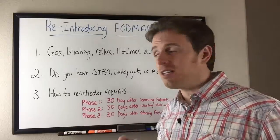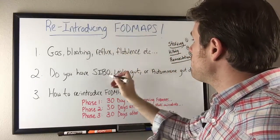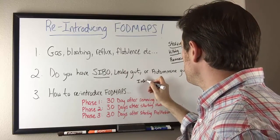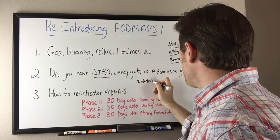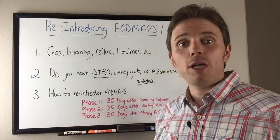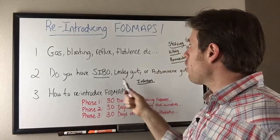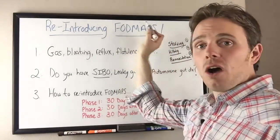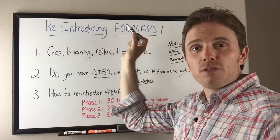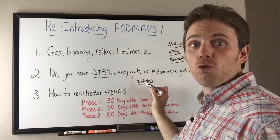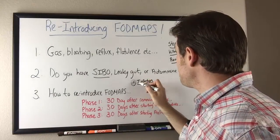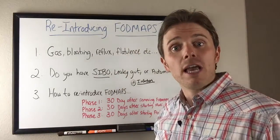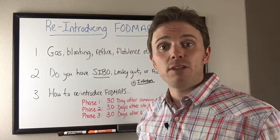FODMAPs tend to be connected with SIBO, but a lot of times we also see infections. If you have a chronic Epstein-Barr, chronic Lyme, or a chronic parasite, bacteria, or fungal issue, that may also be causing FODMAP intolerance. Sometimes FODMAP intolerance isn't the underlying cause — the root cause would be getting rid of the infection.